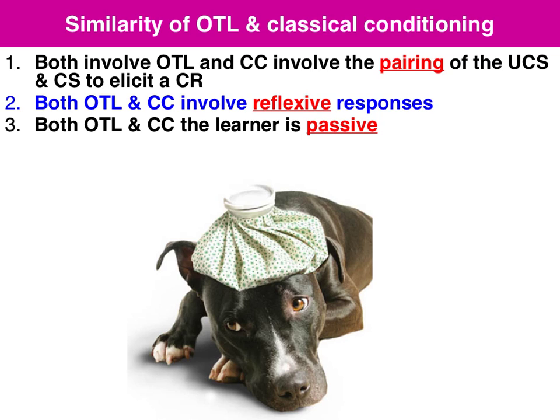Both involve a reflexive response. For instance, if you have an aversion to fish, it's not a conscious thing — you don't think 'I'm going to look and smell that fish and now make myself feel ill.' It's a reflexive process controlled by the autonomic nervous system. And both involve passive learning as opposed to active learning, because it's not based on consequences, which is what we have with operant conditioning.